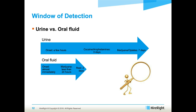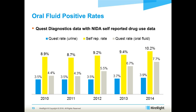The detection window for oral fluid is about two days, while urine drug testing for the standard five-panel drugs can go out to about seven days, so there is that difference. When you look at Quest data compared to self-reported drug use data and then layer in the Quest oral fluid data, the self-reported drug use is on the incline, the urine drug screening positive rate is essentially flat, and then the oral fluid lab positive rate is mimicking the same line as the self-reported rate.